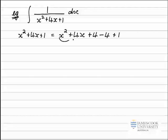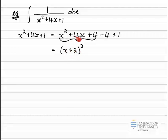If I've done that process correctly, the first three terms here should give me a perfect square, which they do: x plus 2 all squared. I can just double check that — x squared plus 2 times 2 times x is 4x, plus 2 squared is 4. Gathering the remaining terms: minus 4 plus 1 is minus 3.